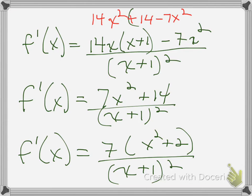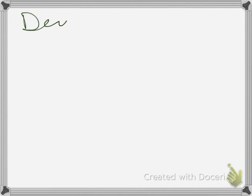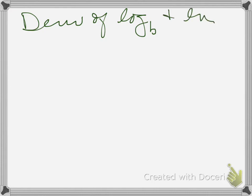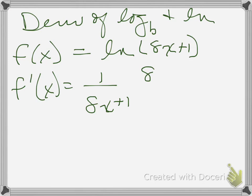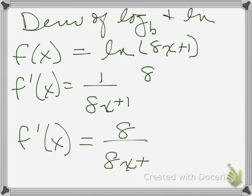Let's jump into some natural log stuff — derivatives of log base whatever and ln. Let's start with ln because those are so easy. So f of x equals the natural log of (8x plus 1). My f prime of x will equal 1 over (8x plus 1) times the derivative of (8x plus 1), which is just 8. So my final form is going to be 8 over (8x plus 1). Done — I can't factor anything out. Do not cancel those x's; that would be a mistake.